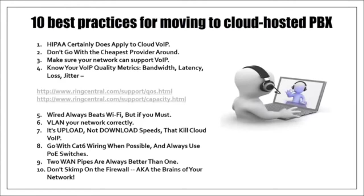Since it's Voice over IP, if your internet connection goes down, so does your phone system. Two internet connections — two WAN pipes — are always better than one. Always have a secondary failover internet connection set up so phone calls don't drop. Also don't skimp on your firewall — it connects you to the internet, and if we're running voice over it, the firewall also needs quality of service configured to give voice priority over data.